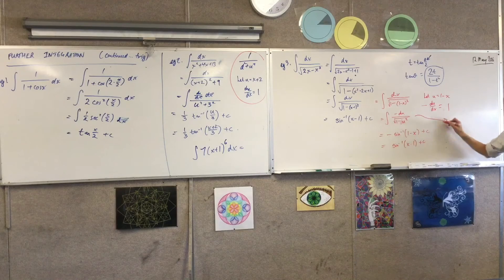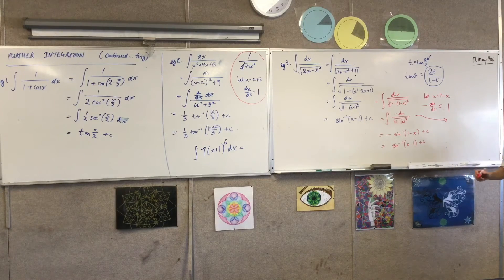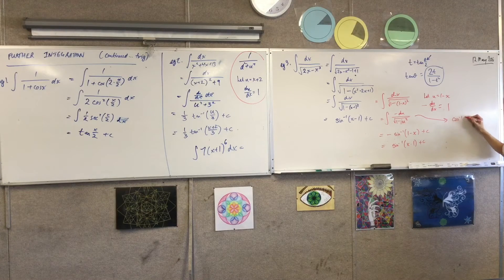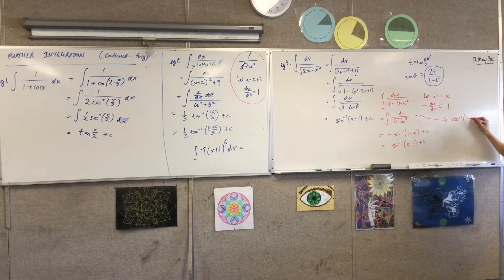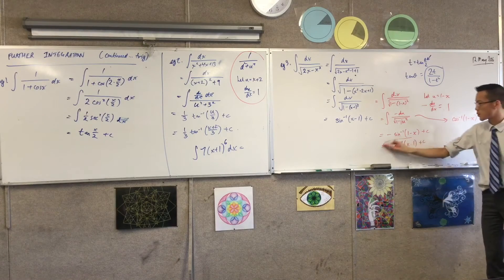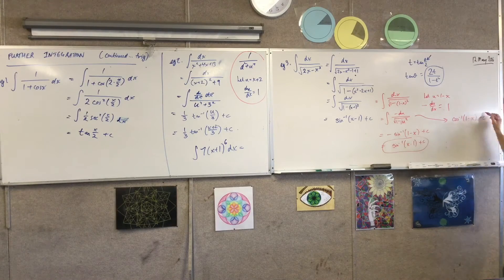If I go from this guy, because the gradients differ by just a linear sign, this is going to be cos inverse of 1 minus x, plus C. But think — what's the difference between this and this?